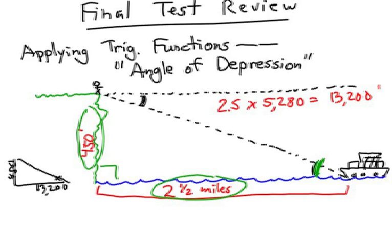What trig function are we going to use that uses the opposite and the adjacent sides? That's right, tangent of my unknown angle X equals 450 feet compared to 13,200 feet. So, the tangent of X equals, let's divide this out, and we get 0.0341.